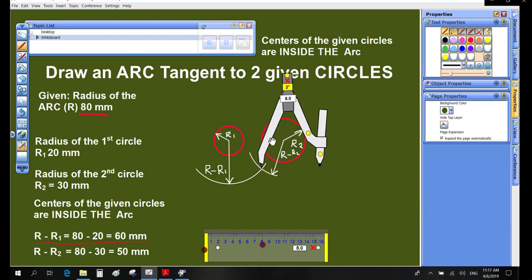From the center O and radius R, draw an arc tangent to the given two circles.